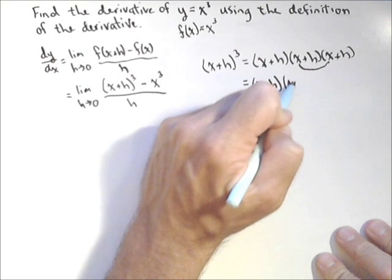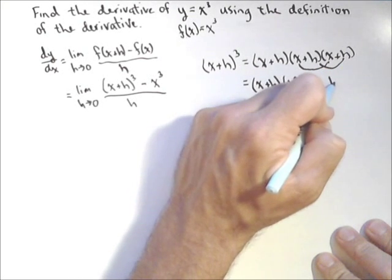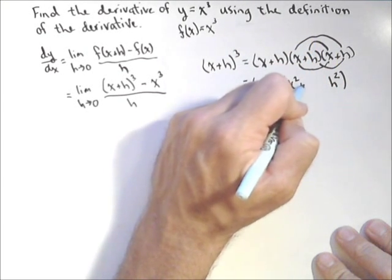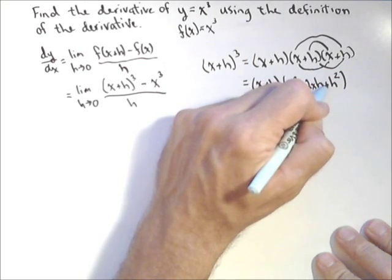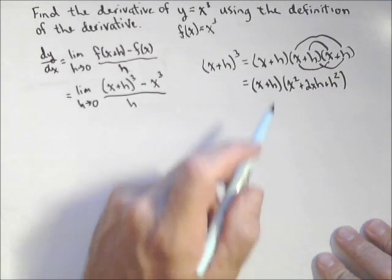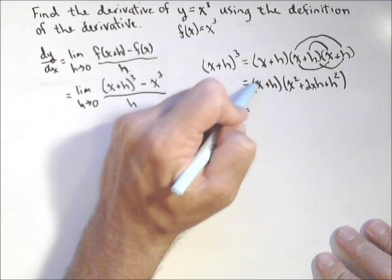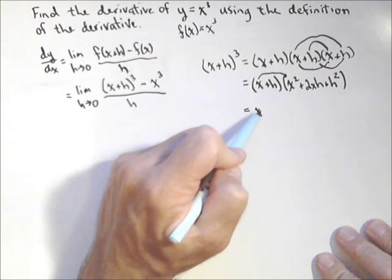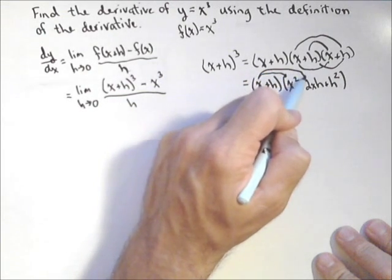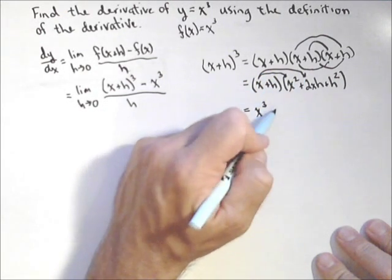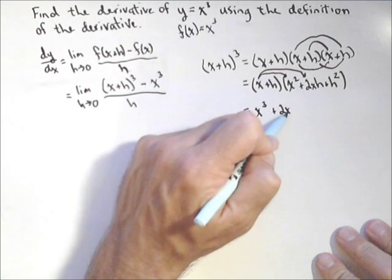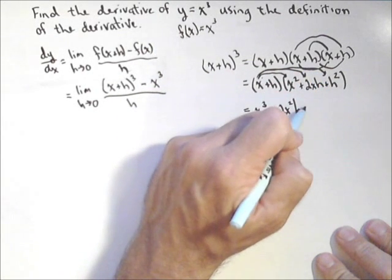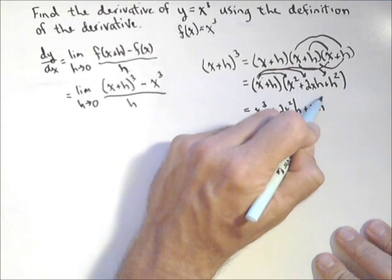x times x is x squared. h times h is h squared. Now we've got an xh and an xh, so in between here we've got plus 2xh. Now let's distribute this x. x times x squared is x cubed. x times this middle piece gives us an x squared in there, so plus 2x²h. And then x times this last part gives us a positive xh².